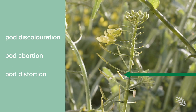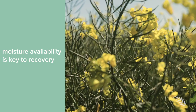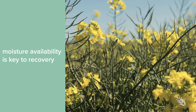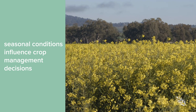This is a frost-affected pod where pods have been lost. In a favourable season with enough soil moisture to finish the crop, there are better chances of recovery and compensation, whereas if heat stress follows, there will likely be less chance of recovery. Farmers have to make decisions depending on seasonal conditions — whether to go for graze, hay, or grain.